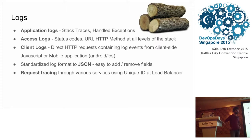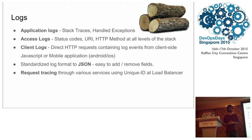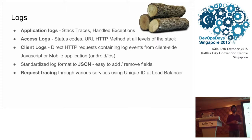We also have a unique use case: we send client event data from client-side JavaScript and mobile applications. This is useful for debugging crashes unless you want to pay for an expensive service like Crashlytics. You can have entire stack traces sent to you and stored in your own Elasticsearch. We have standardized all log formats to JSON — easy to add and remove fields, slightly verbose with a slight overhead, but very flexible. And as I mentioned, request tracing through various services using a unique ID.